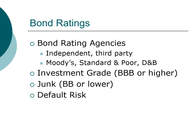Bond ratings focus on default risk. The higher the default risk, the lower the bond rating, and therefore the higher the coupon rate and yield to maturity. The investment grade classification is also important because many government agencies, retirement funds, and pension funds are restricted from investing in bonds rated below investment grade. Once a company's bond falls to double-B or lower, it loses a lot of potential buyers, making the market for those junk bonds very illiquid — very hard to sell when you need to.